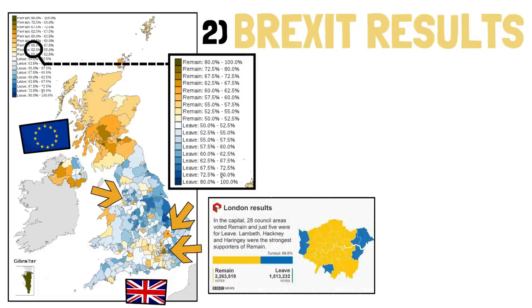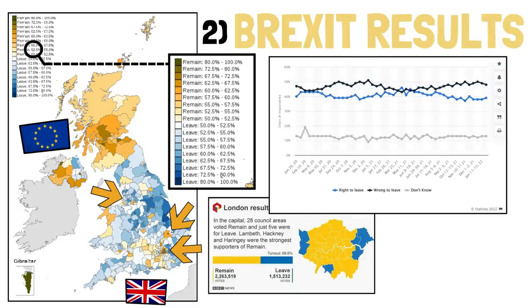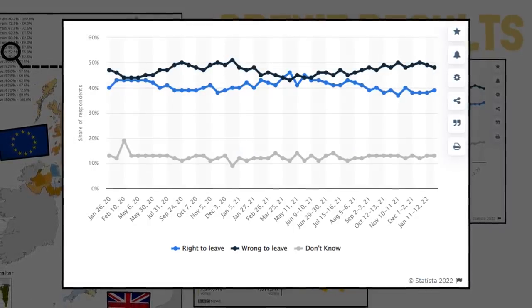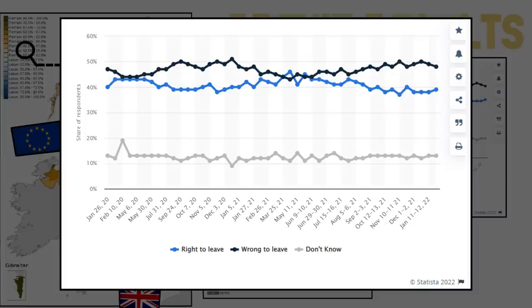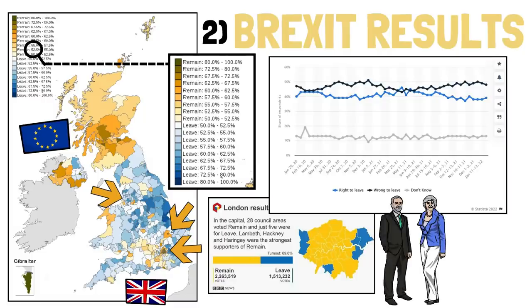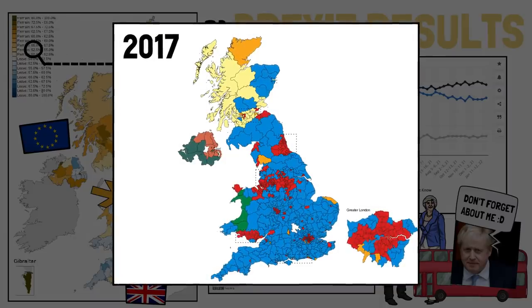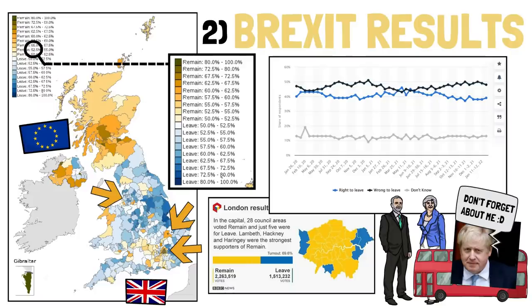Many urban centers, especially London, voted to remain as well. We don't have recent poll data in map form, but this chart from Statista asks people whether they think it was right or wrong to leave the EU. Despite Leave having won in 2016, it's been almost constant over the past two years that people regret leaving — only in March 2021 did a poll show general agreement with having left. Interestingly, places that mostly voted to leave don't necessarily just vote Conservative, showing this is a divisive issue not purely driven by party affiliation.